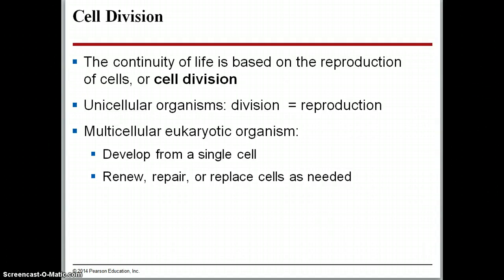A protist would divide into two daughter cells, and that would be how it reproduces. For multicellular eukaryotic organisms, they have a variety of different reasons why they need to go through cell division — either initially for development purposes and growth, and later for renewal, repair, and replacement of cells. If you get a cut on your hand, your cells will go through cell division to replace all of those damaged cells.